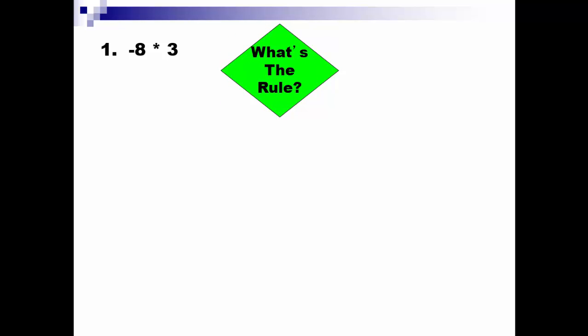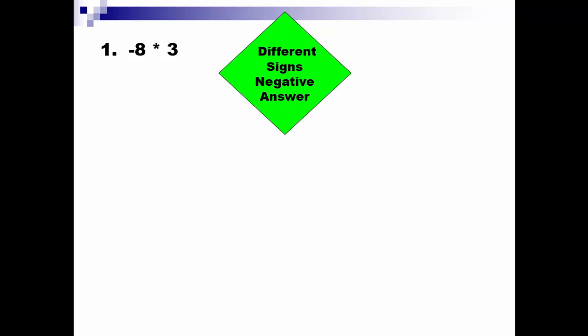The first thing you ask yourself when you do negative 8 times 3: what rule will I use? It's multiplication. Signs are different, so we know the answer will be negative. 8 times 3 is 24, and a negative times a positive is a negative. So that's going to be negative 24.